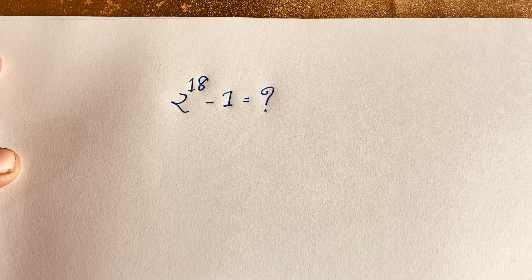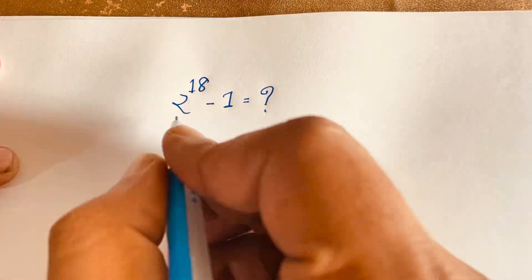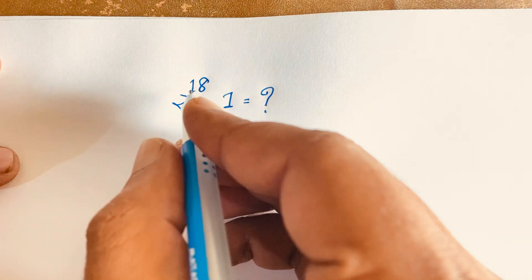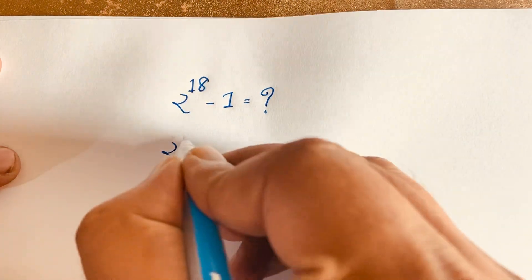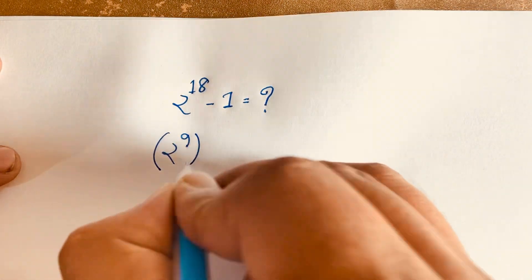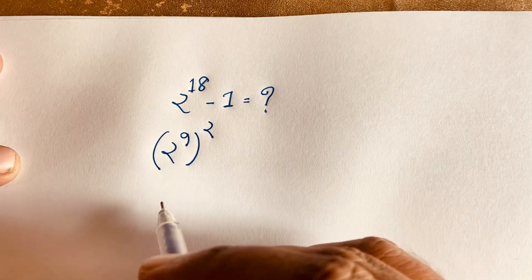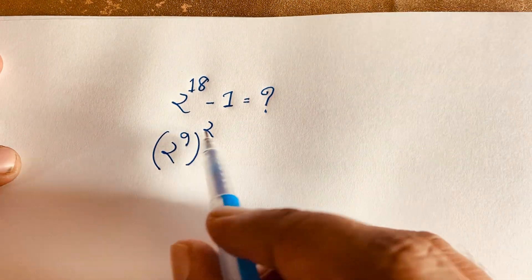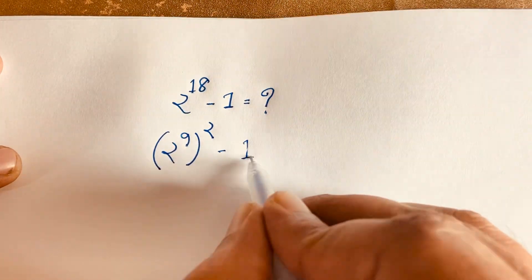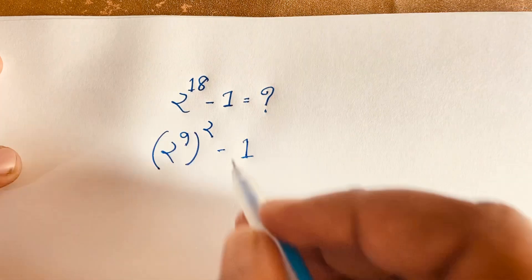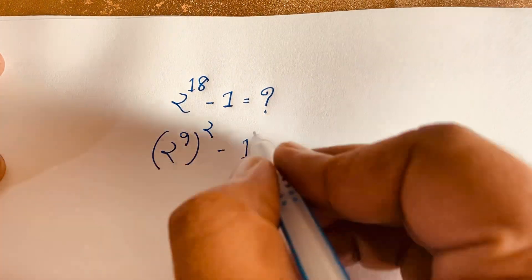We have solved this question without a calculator. 2 to the power 18 can be written as 2 to the power 9, whole squared, according to the exponential law. So we have 2 to the power 18 minus 1, and if you take this as a square minus 1...